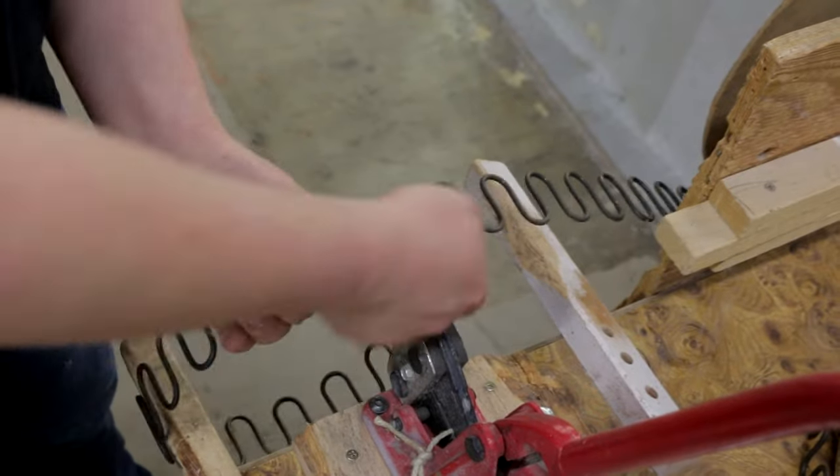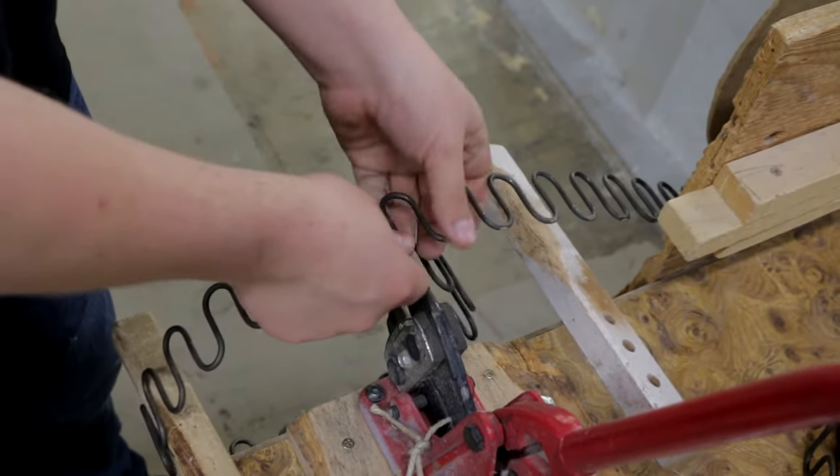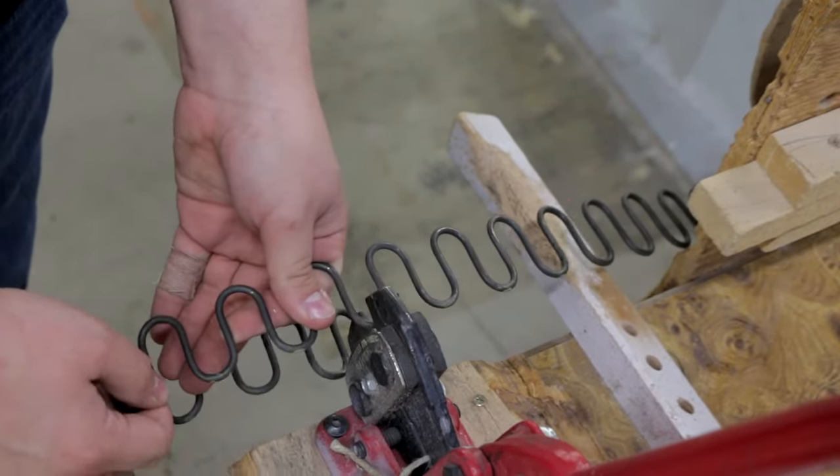In this case, the number was 21. So I'll count 21 loops starting with the first loop on the right side until I get to 21. Then I'll cut on the 21st loop.